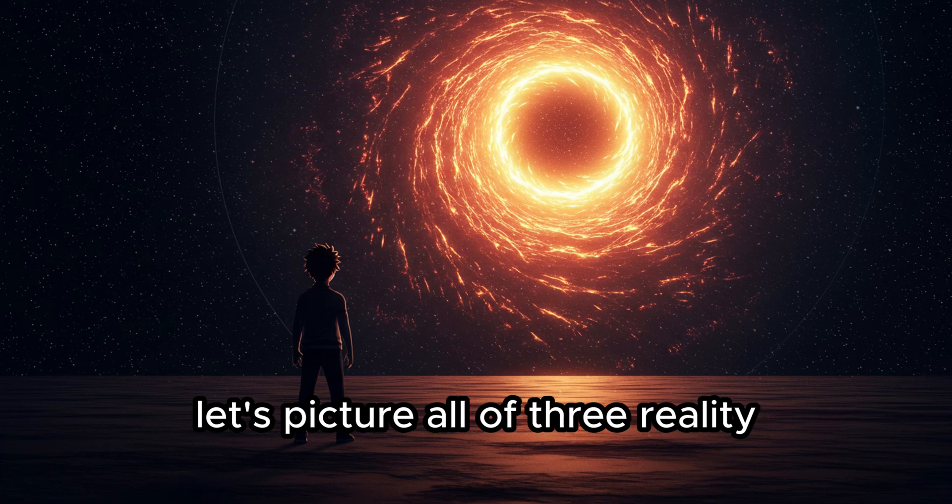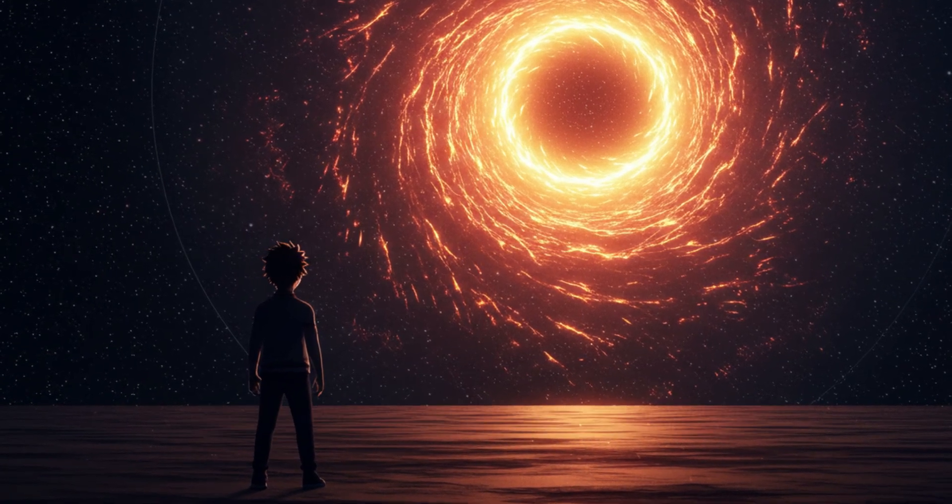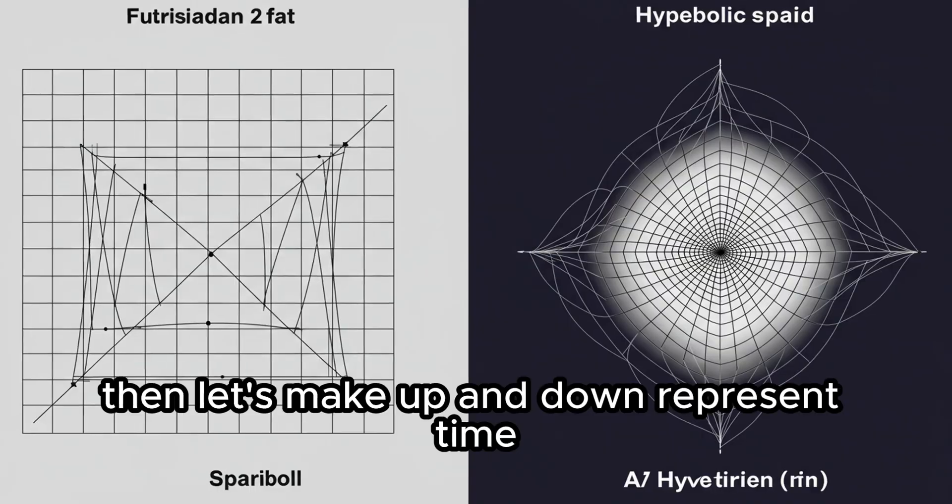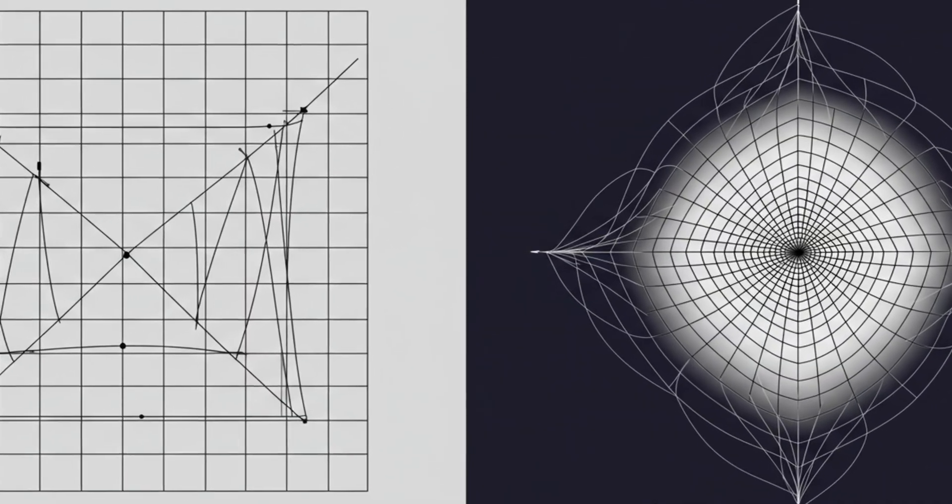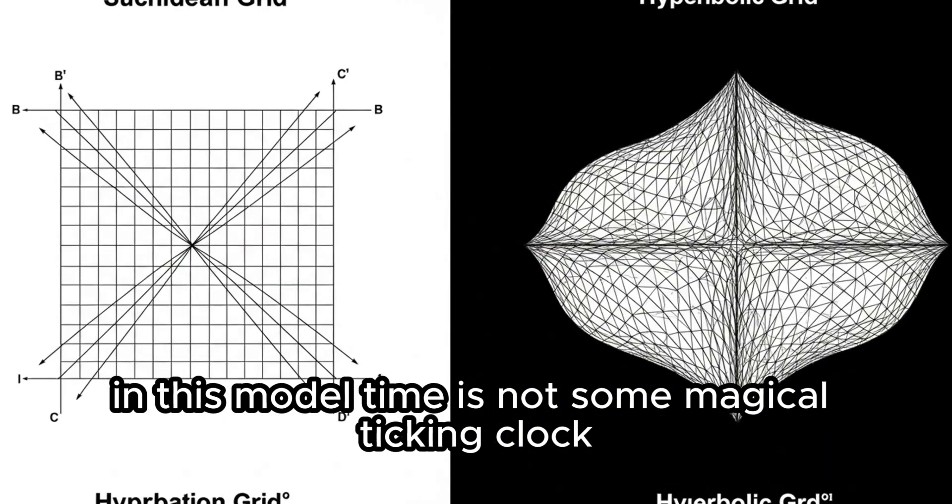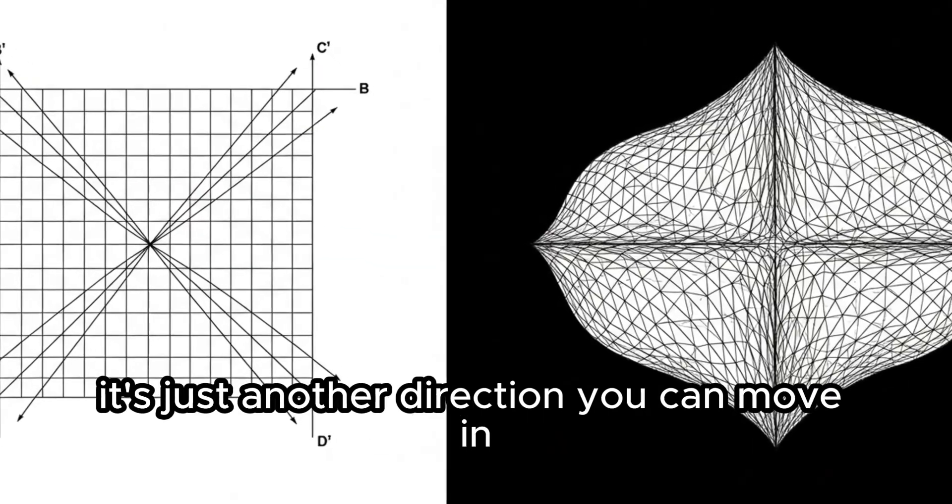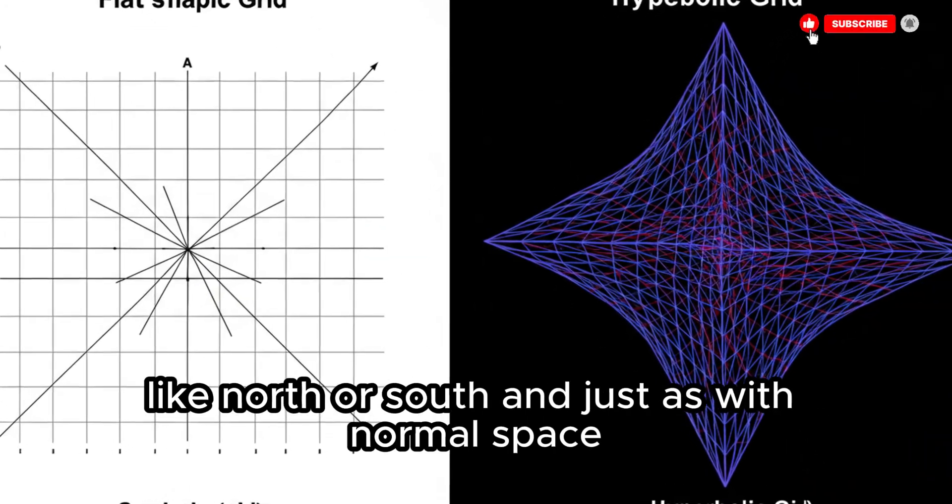Let's picture all of 3D reality compressed onto a flat sheet. Then let's make up and down represent time. Space goes left to right, time goes up and down. In this model, time is not some magical ticking clock. It's just another direction you can move in like north or south.